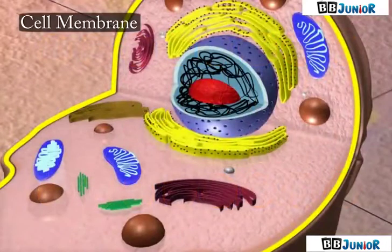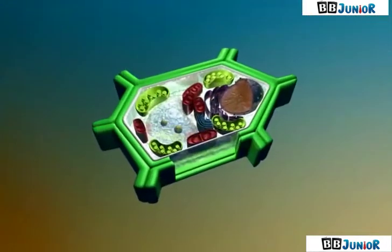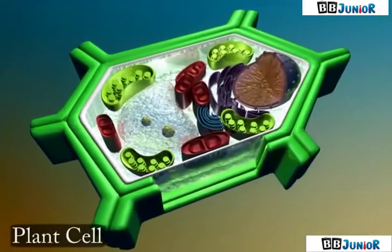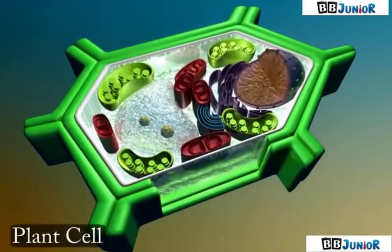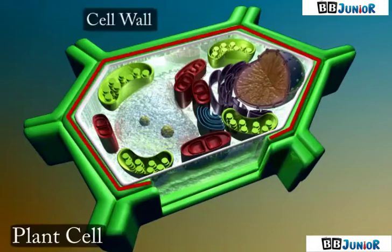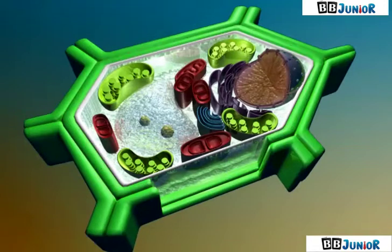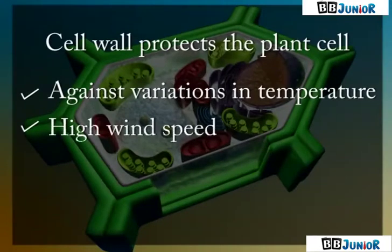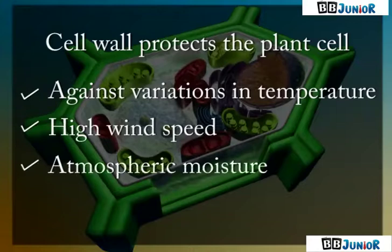In addition to the cell membrane, there is an outer thick layer in plant cells called the cell wall. This protects the plant cell against variations in temperature, high wind speed, atmospheric moisture, etc.